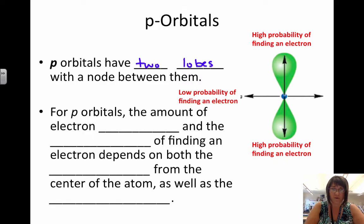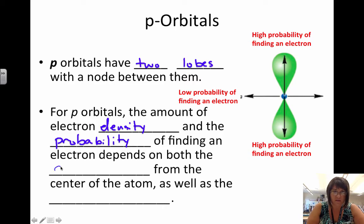For p orbitals, the amount of electron density and the probability of finding an electron within that space depends on two things. First of all, it depends on the distance we are from the center of the atom, the distance from the nucleus. And it also depends on direction.